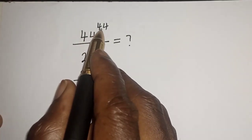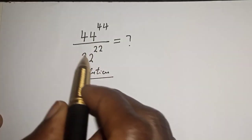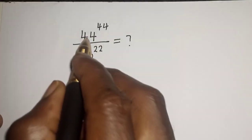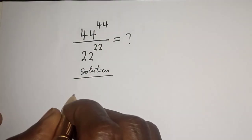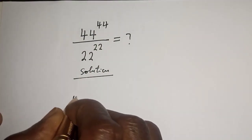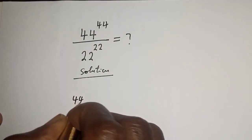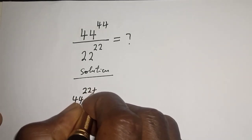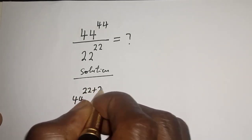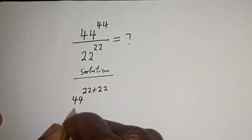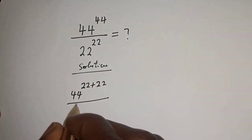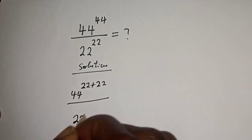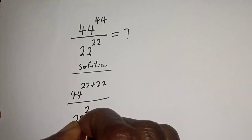We have 44 raised to power 44 divided by 22 raised to power 22. 44 raised to power 44 can be written as 44 raised to power 22 plus 22, divided by 22 raised to power 22.